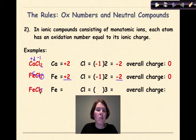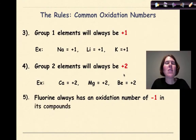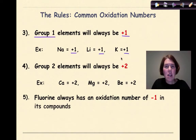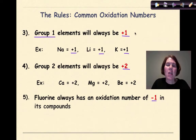For FeCl3, uncrisscrossing the 3 gives Fe a charge of plus 3, chlorine is minus 1, and minus 1 times 3 gives minus 3 — so plus 3 and minus 3 cancel for an overall charge of 0. Regarding common oxidation numbers: Group 1 elements always have a charge of plus 1 (sodium, lithium, potassium), Group 2 elements always have a charge of plus 2 (calcium, magnesium, beryllium), and fluorine always has an oxidation number of minus 1 in its compounds. Note that hydrogen, though affiliated with Group 1, is its own special case as a non-metal.